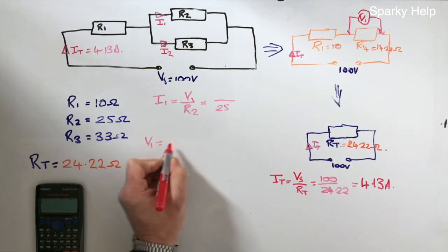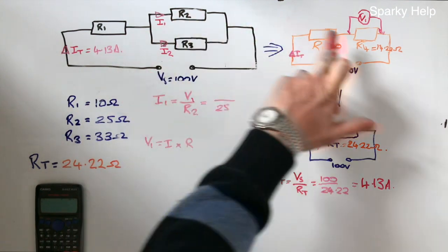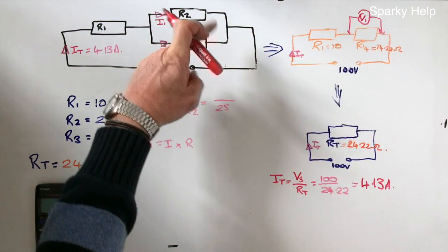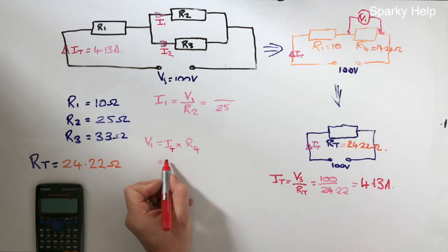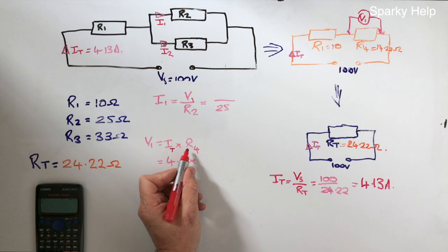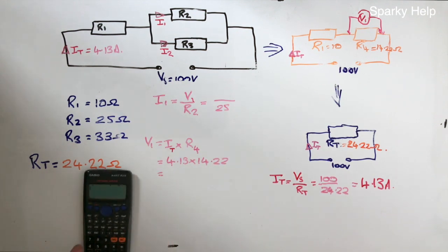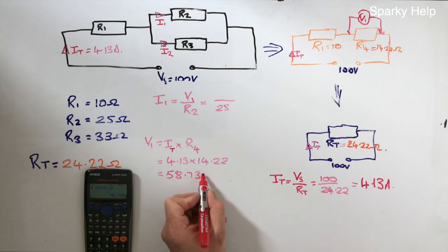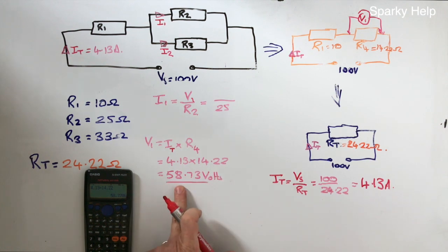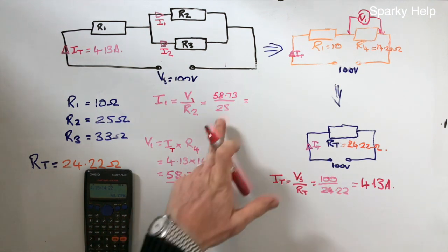V1 is I times R. From straightforward Ohm's law. But it's which current. Well we only know that current. We can't use this because we don't have a current going through that. We can look at this circuit. Because this here is all of that. So that becomes IT times R4. So if we look at the series circuit that we made up. So that becomes 4.13 times R4. Which is 14.22. And if we put it in our calculator. We get 58.73 rounded up. And this will be volts. So that then is our V1. So that is what goes up here. 58.73.